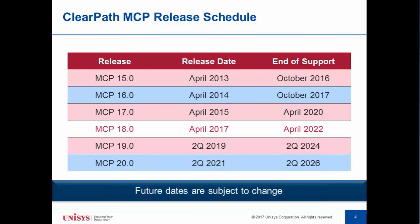This is the MCP release schedule. Formerly, we were doing MCP releases every year, but between MCP 17.0 and MCP 18.0 we've switched to a two-year cycle, which we think will make it easier to plan upgrades. MCP 18.0 will become available at the end of this month and will be supported for five years until April of 2022. If you're still running MCP 16.0, support ends at the end of October this year — six months from now. We're currently planning MCP 19.0 for the second quarter of 2019.